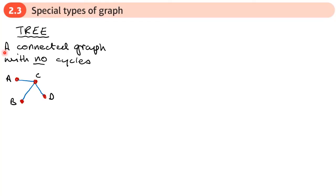So the first thing we're looking at is a tree. A tree is a connected graph with no cycles. So connected means that there's a way of getting to every vertex.